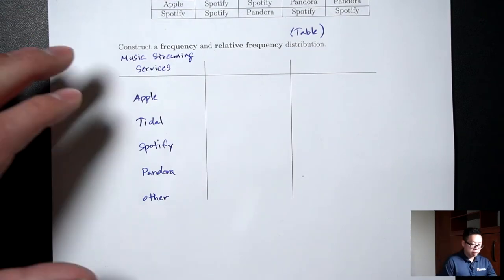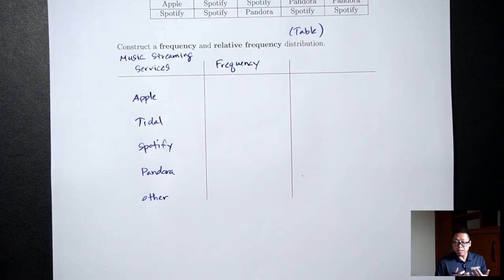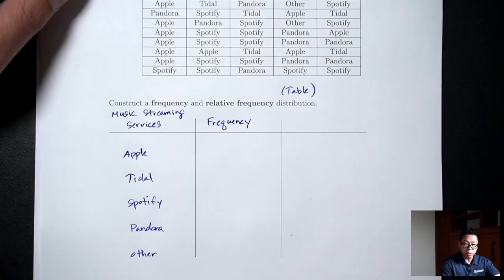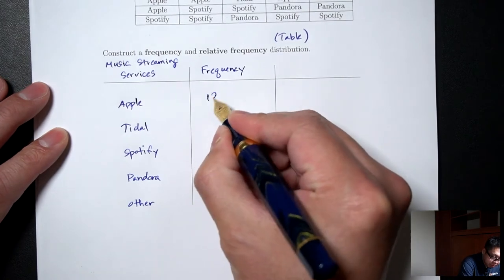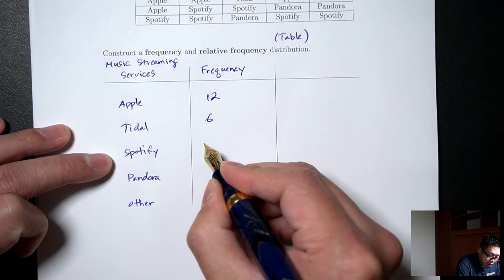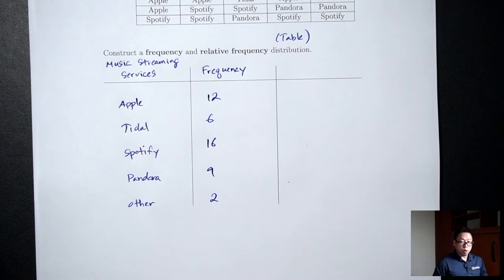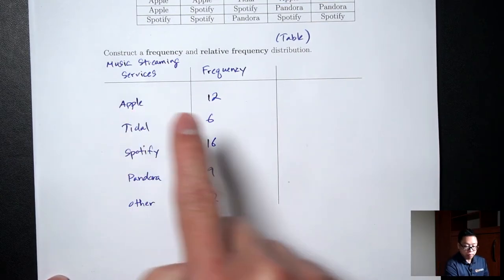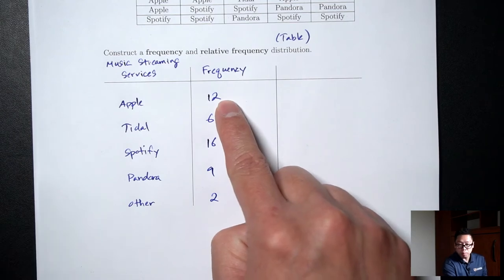The first thing we want to calculate is the frequency. Frequency just means how many. So we're just going to count how many Apples there are in our data set. In the lab, we're actually going to use R to count for us, so we're not going to count by hand. If you were to go through and count all the Apples, you should see that there are 12 Apples, 6 Tidals, 16 Spotifys, 9 Pandoras, and 2 Others. This 12 means that there are 12 people who said Apple was their favorite, and 6 people who said Tidal was their favorite.